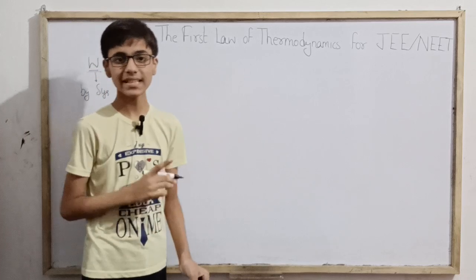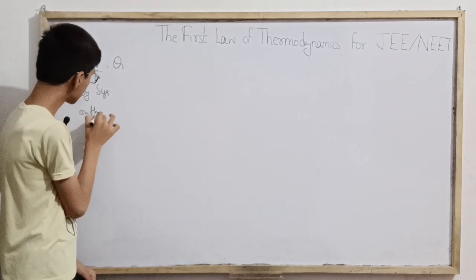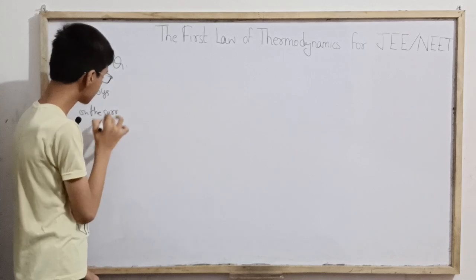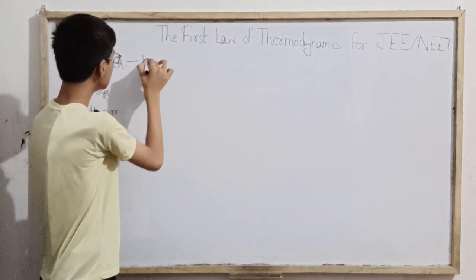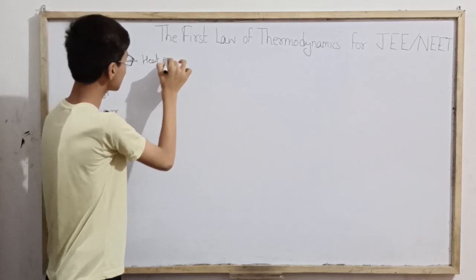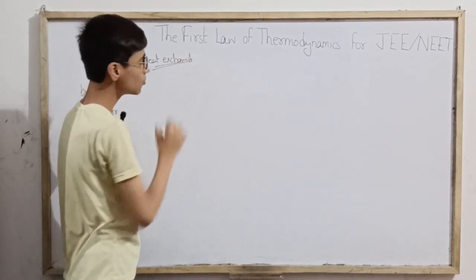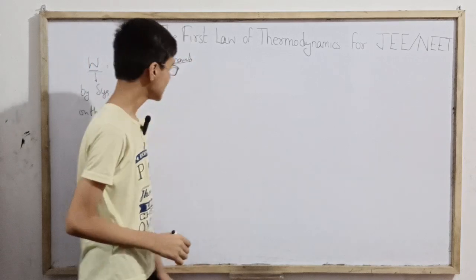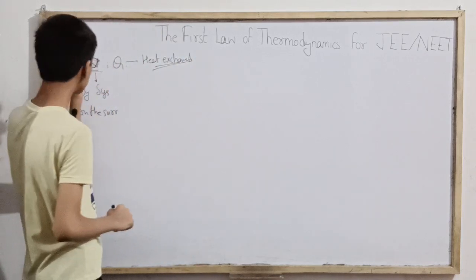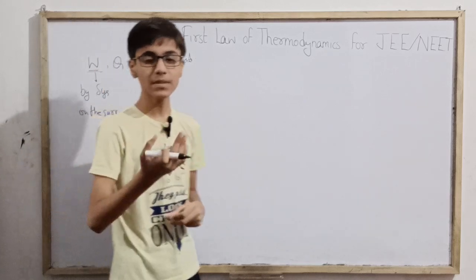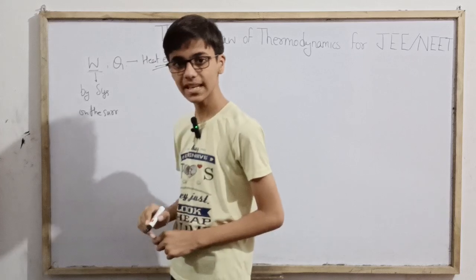W is the work done by the system on the surroundings. Our second quantity is Q, which is the heat exchanged in a thermodynamic process — how much heat exchange has occurred in this kind of thermodynamic state change. Now let's talk about sign convention: when our system does work on its surroundings, in that case W is taken as positive.